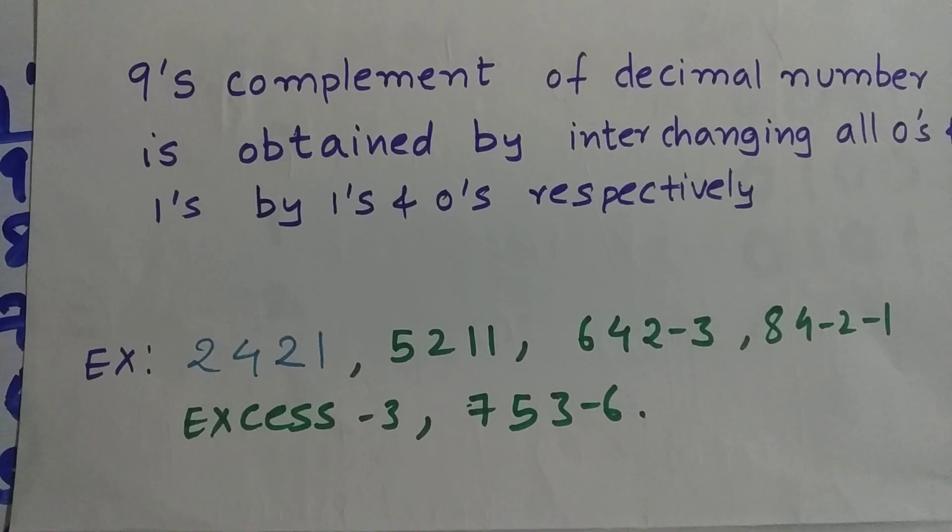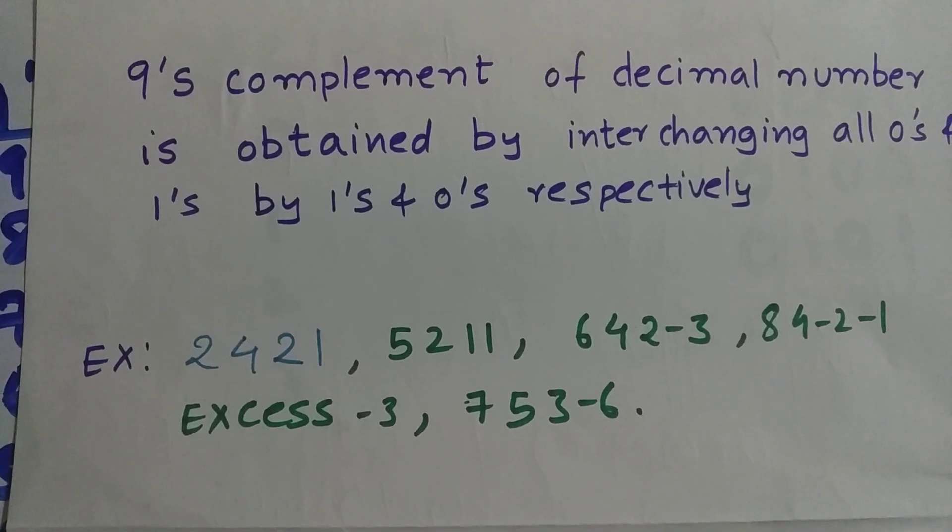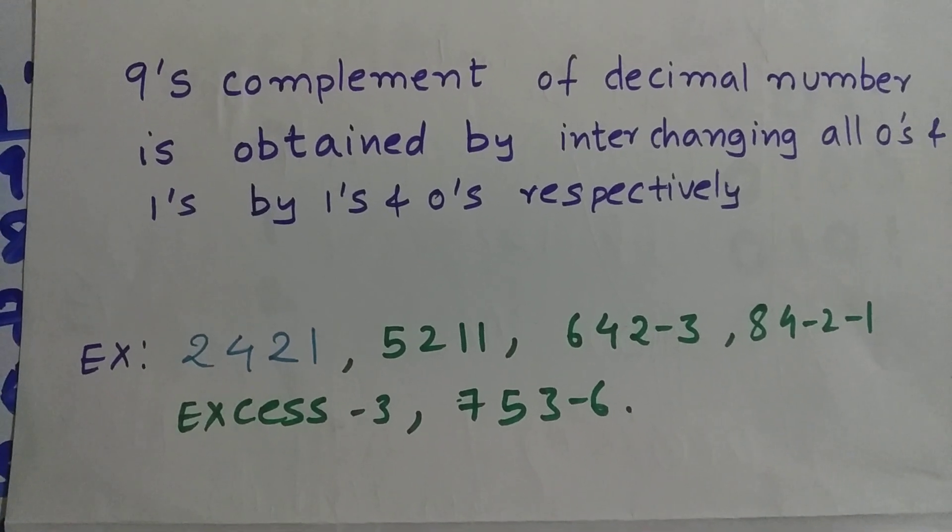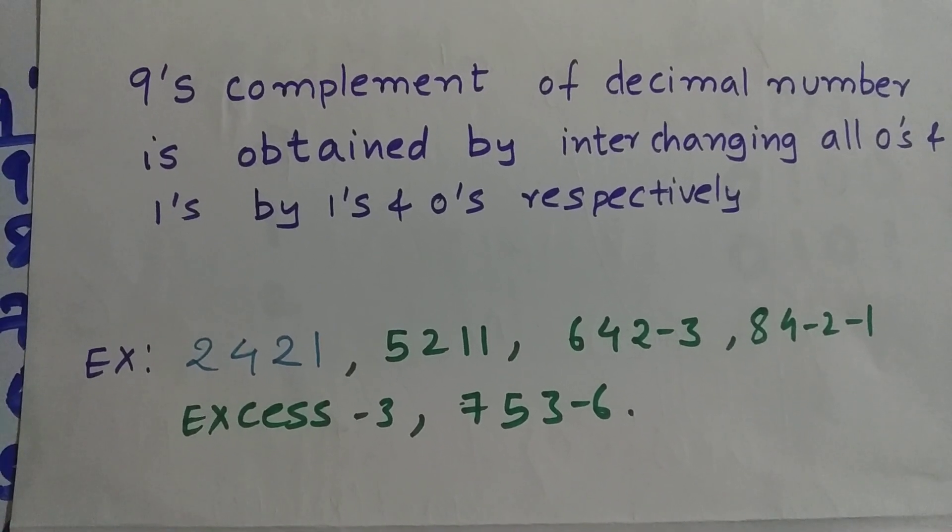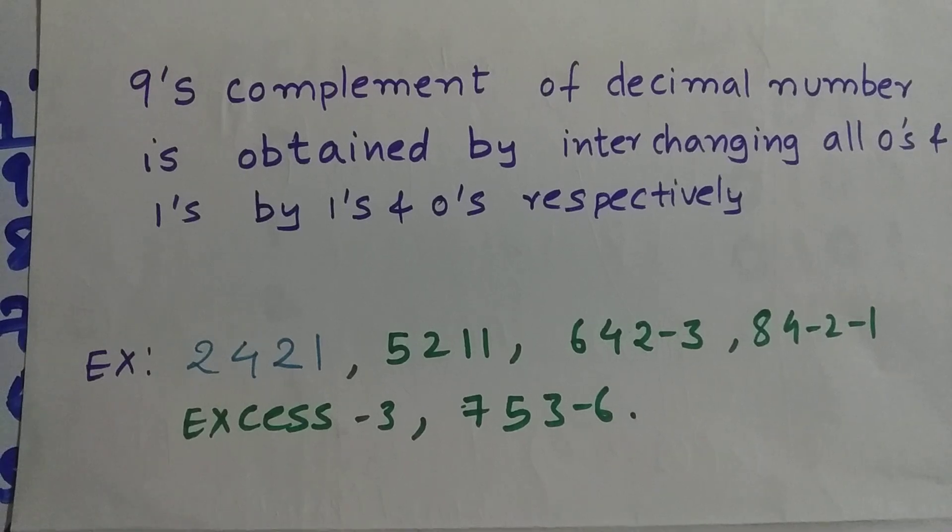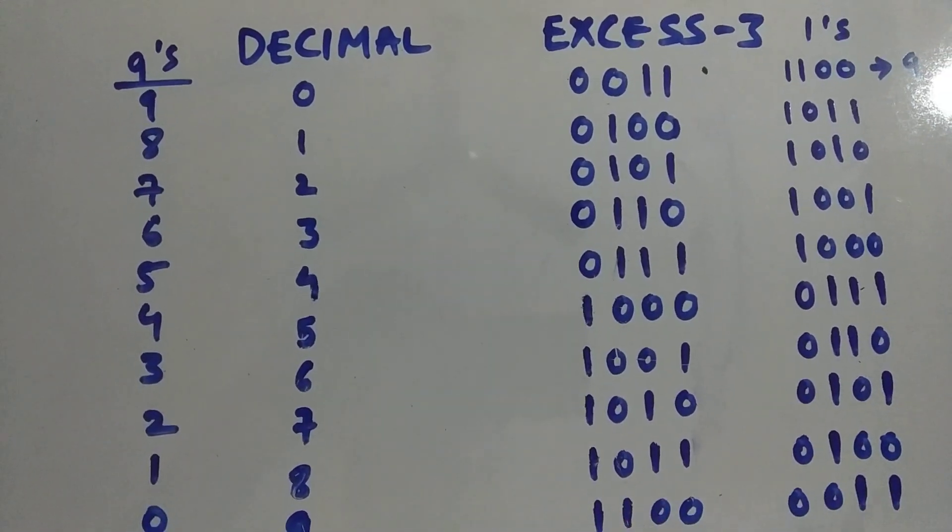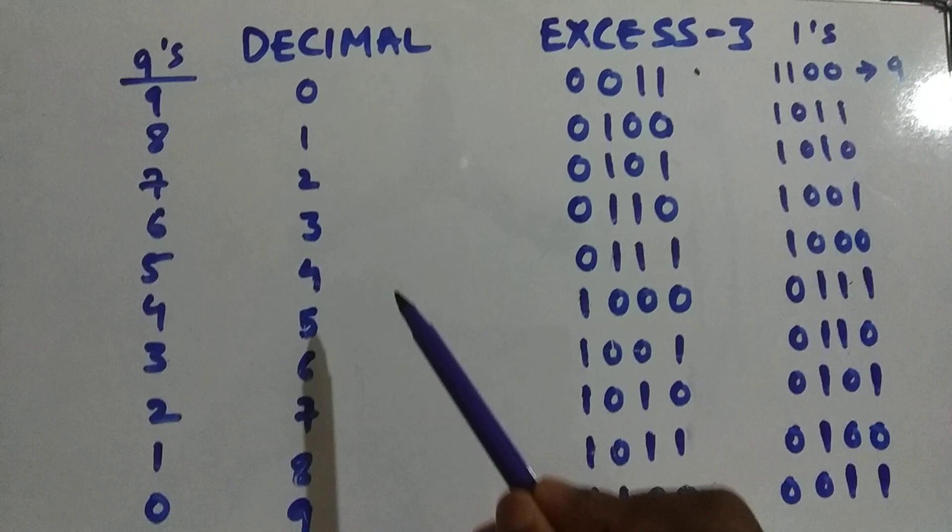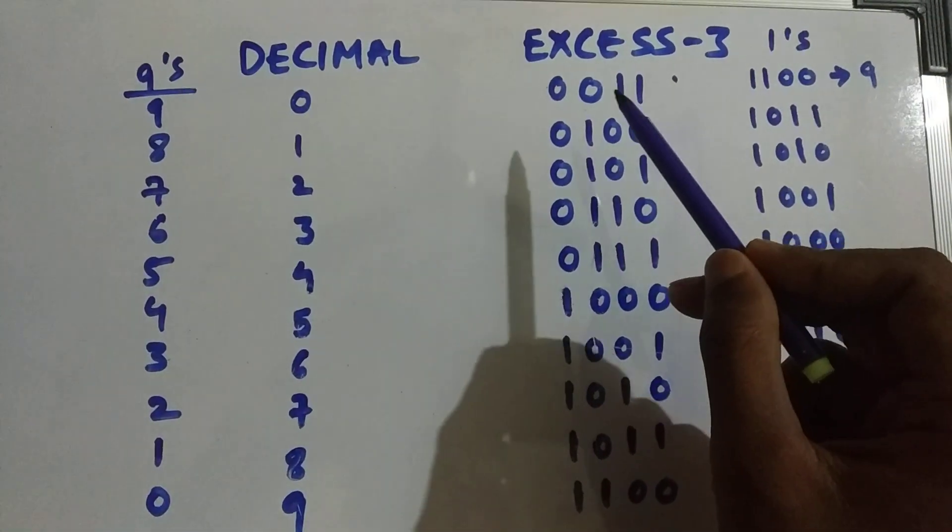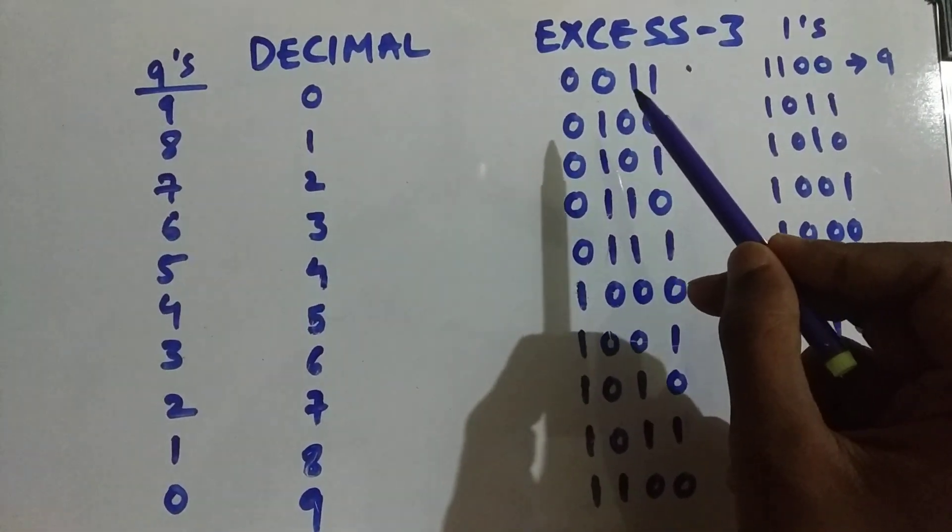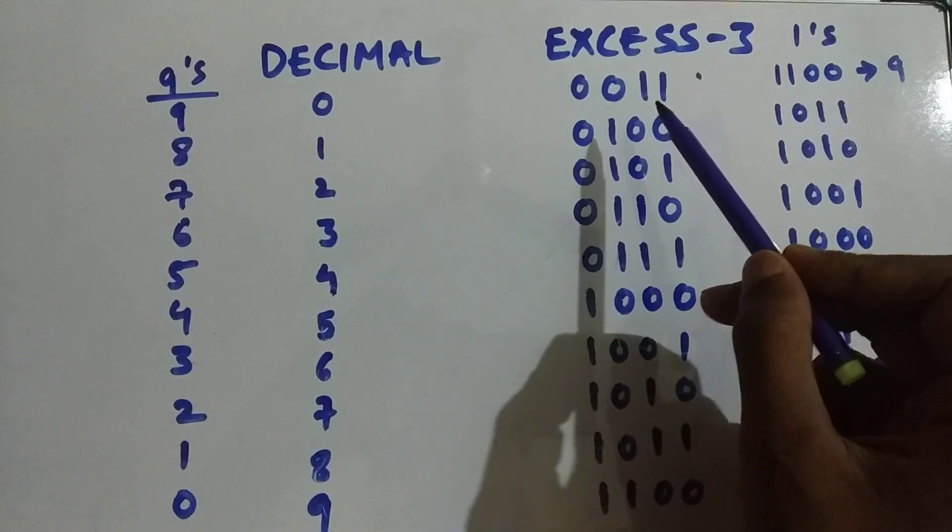So I'm going to take Excess-3 code and explain how the self-complementing is done and whether the code is self-complementing or not. As you can see here, this is the decimal 0 to 9 and Excess-3 code written in binary form.